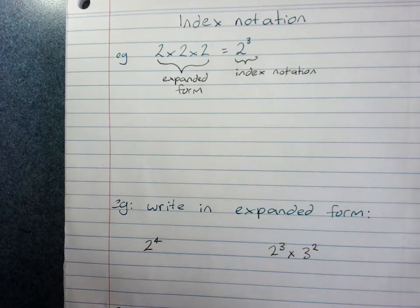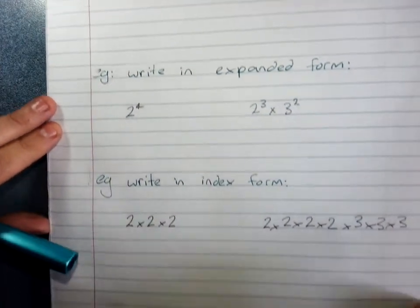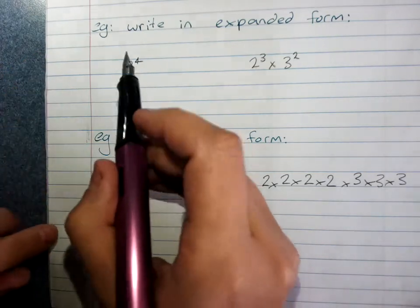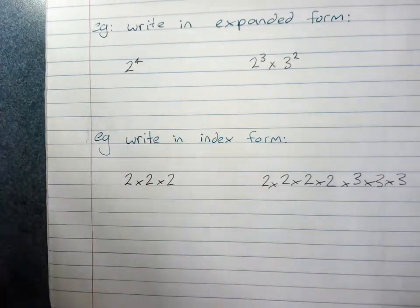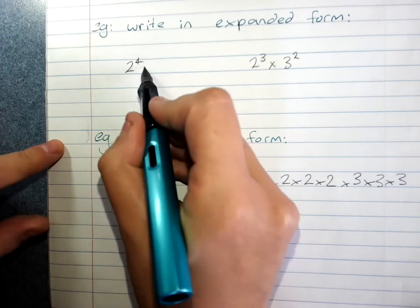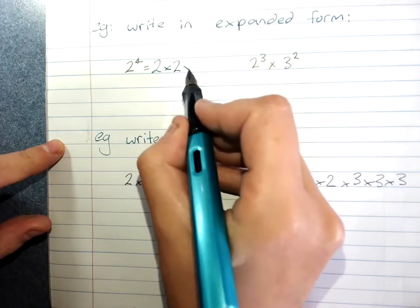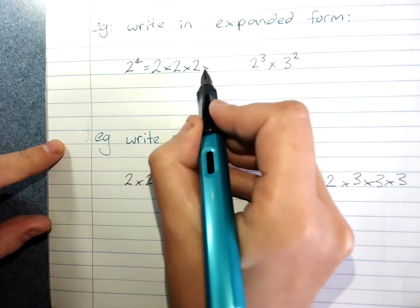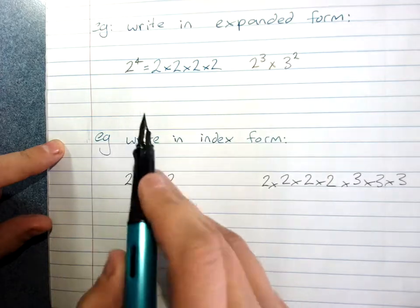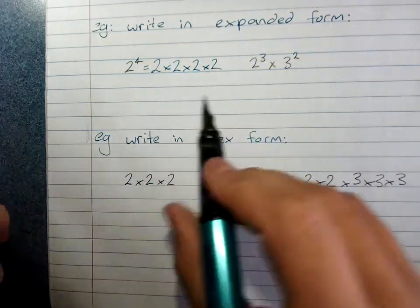We need to be able to move between index form and expanded form. For example, write 2 to the power of 4 in expanded form — this is in index form. Expanded form means this is 2 times 2 times 2 times 2. They want it in expanded form, so we don't need the answer.